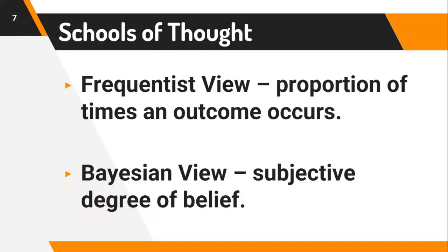When it comes to the Bayesian interpretation, it is based on subjective degree of belief. For instance, if there is the belief that it's going to rain, two or more people may assign their own probabilities as to whether it will rain. We build on these prior probabilities and use them to make a decision about the particular outcome in the future, which is called a posterior belief. Bayesian interpretation is more or less a whole course on its own.